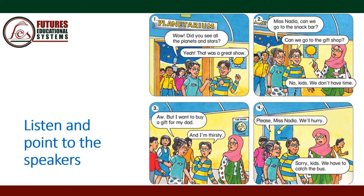Listen and point to the speakers. Picture 1 — Kim: 'Wow, did you see all the planets and stars?' 'Yeah, that was a great show!' Picture 2 — 'Miss Nadia, can we go to the snack bar? Can we go to the gift shop?' Miss Nadia: 'No, kids, we don't have time.' Picture 3 — 'Oh, but I want to buy a gift for my dad, and I'm thirsty.' Picture 4 — 'Please, Miss Nadia, we will hurry.' Miss Nadia: 'Sorry, kids, we have to catch the bus.'